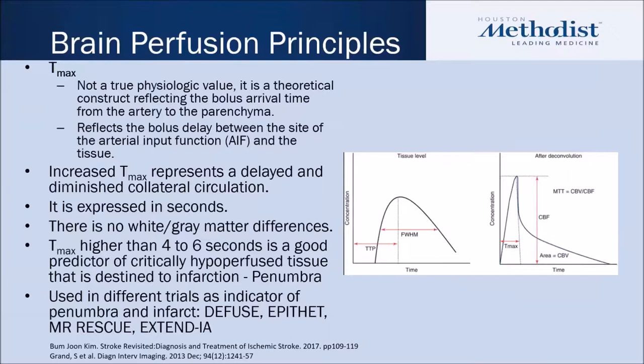The T-max — we just talked about using a deconvoluted algorithm to solve for this — it's not a true physiologic value. It's a calculated or theoretical construct reflecting the bolus arrival from artery to the parenchyma, to the tissue. It reflects the delay from arterial input function to the tissue. Increases in T-max represent a delayed and diminished collateral circulation. There's no real difference between white and gray matter because it's a calculated measure. Generally, depending on the software, T-max greater than four to six seconds is a good predictor of critically hypoperfused tissue that may be destined for infarction, or penumbra. This has been used and studied in subgroup analyses of multiple studies including DEFUSE, MRS, EXTEND IA, and others.